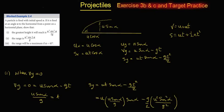The worked example 3.4 says that a particle is fired with an initial speed of u, and if it is fired at an angle alpha to the horizontal, from a point on the horizontal plane, show that these three things, the greatest height. The reason I chose this worked example is because there's algebra in it, which is a slight change from what we've done so far.